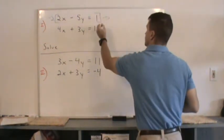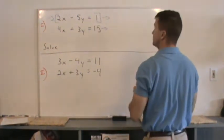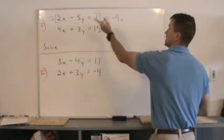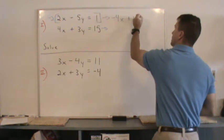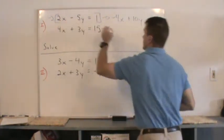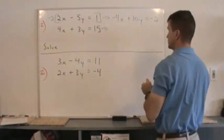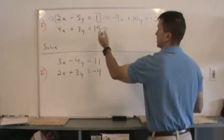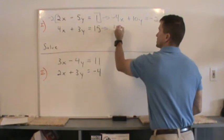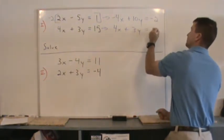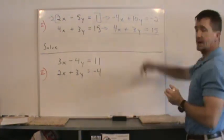So here we go. I'm going to rewrite this system. This system is now negative 4x plus 10y, negative times a negative is a positive, equals negative 2. You got to multiply the negative 2 here also. Now, I didn't change the second part, so the second part remains 4x plus 3y equal to 15. And now, I'll just add down.